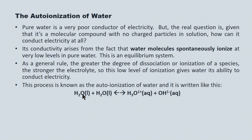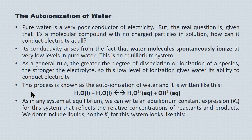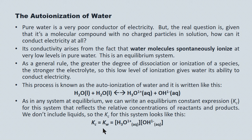Two water molecules are in equilibrium with a hydronium ion and a hydroxide ion. As in any system in equilibrium, we can write a Kc value for the system that reflects the relative concentrations of reactants and products. We don't include liquids in the Kc expression, so it looks like this: Kc equals hydronium ion concentration times hydroxide ion concentration. This is a special equation we apply a lot, so we give it a special designation: Kw.